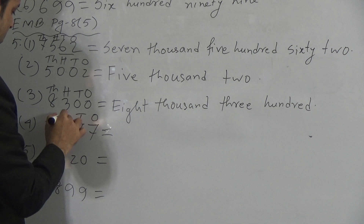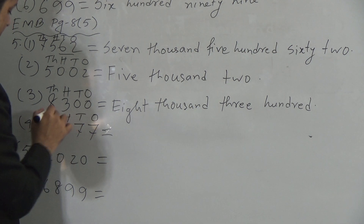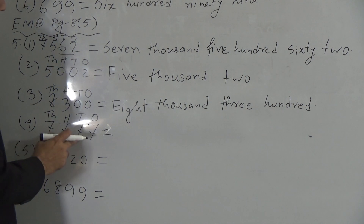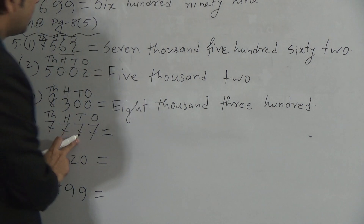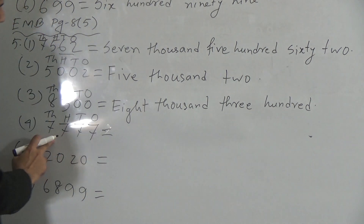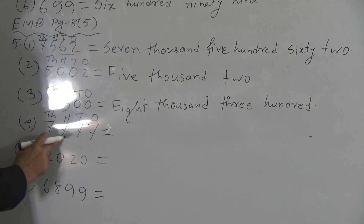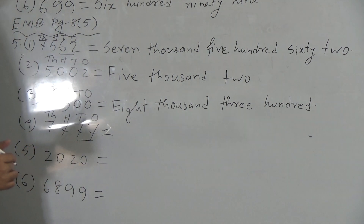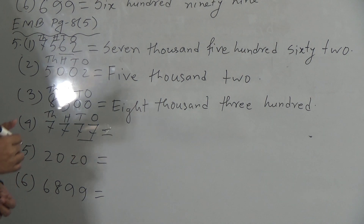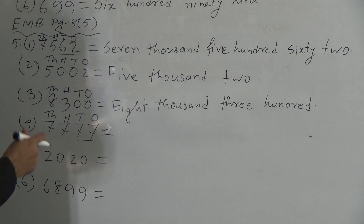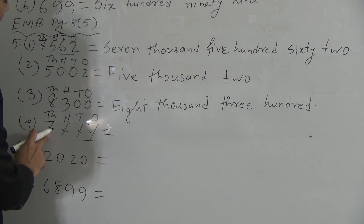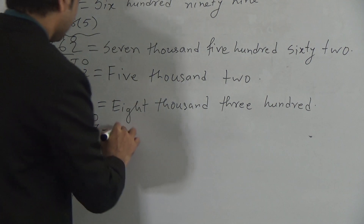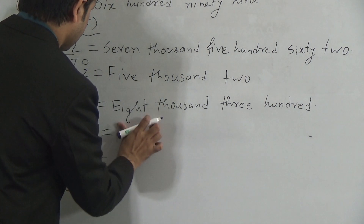Then question 4: 1's, 10's, 100's, 1000's. So 7 is in the 1000's, 7 is in the 100's, 7 is in the 10's, and 7 is in the 1's. So you can read it as 7,700 and these two together 77 — so 7,777.